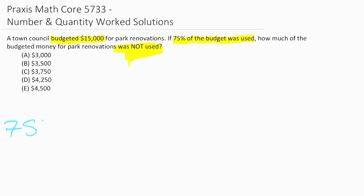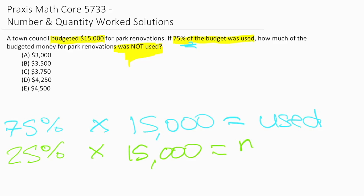Now let's take these words and put it into more of a math problem. So 75% of the budget was used. When we see 'of,' we want to think multiplication, and we know that the budget is $15,000. That represents the money that was used. To figure out what was left over or not used, we have to think about what is the remaining percentage. We have 25% of that budget remaining. So 25% times that $15,000 is going to tell us what was not used or what money is left over.